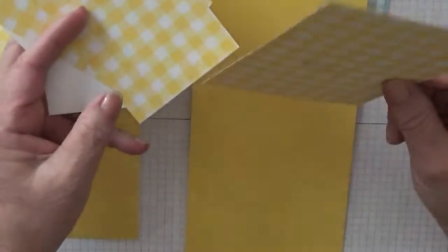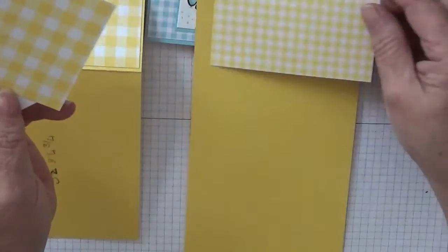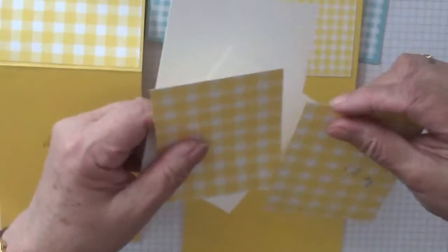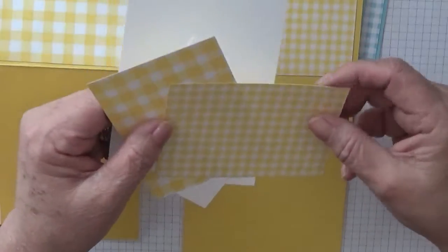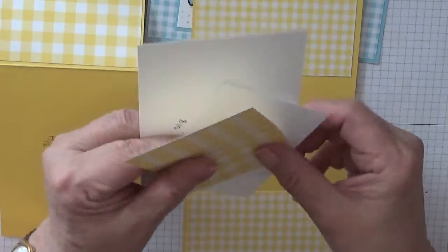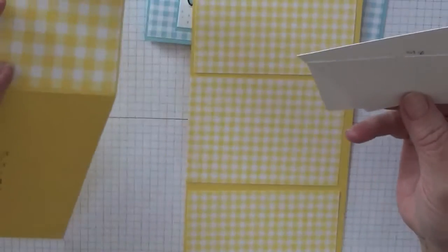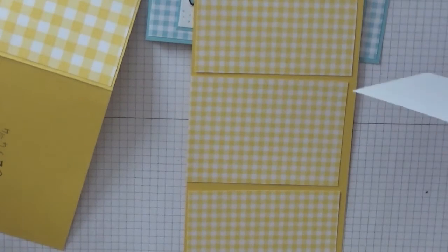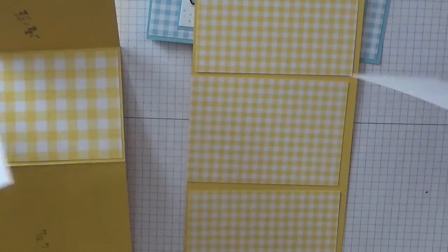So you need one piece at three and seven-eighths by five and five-eighths. You'll need two pieces at three and seven-eighths by two and three-quarters. You also need a piece of gingham paper at two and five-eighths by three and three-eighths.